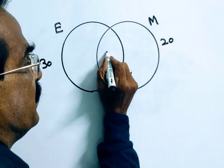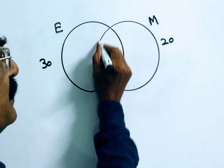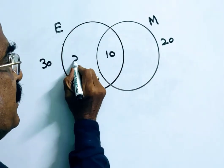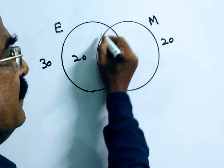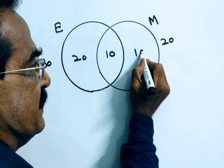That is both subjects. So this is 10. This is 30. This is 10. So 30 minus 10, this is 20. And this is 20. 20 minus 10, this is 10.